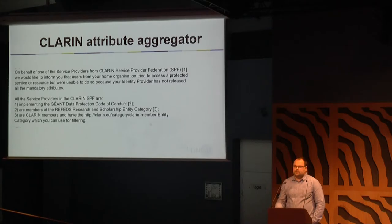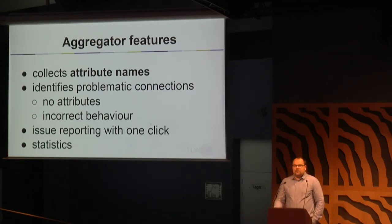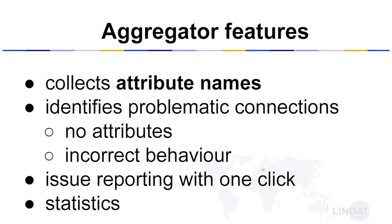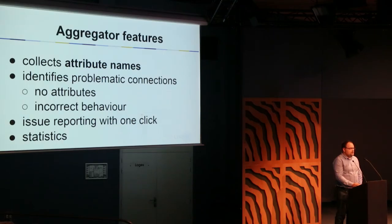To summarize: we created an attribute aggregator. It collects attribute names, identifies problematic connections when no attributes are released or when there is incorrect behavior. You can report issues using one click, and we can do it widely across all participating service providers. We can also create very nice statistics, as shown on maps and in counts.